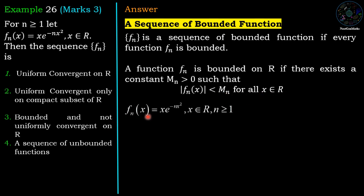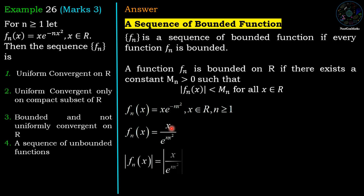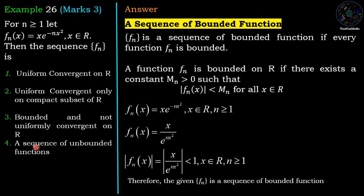For the given function f_n(x) = x · e^(-nx²), for x belongs to ℝ and n greater than equal to 1, we can rewrite the function as x divided by e^(nx²). The growth of e^(nx²) is faster than the growth of x, so x / e^(nx²) is always less than 1. That means |f_n(x)| < 1 for all x belongs to ℝ and n ≥ 1. Therefore it is a bounded function, and option 4 which says it is a sequence of unbounded functions is wrong.